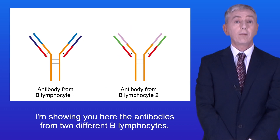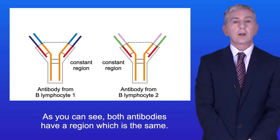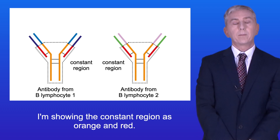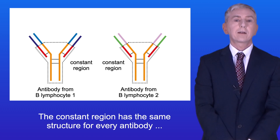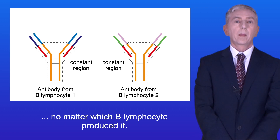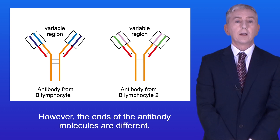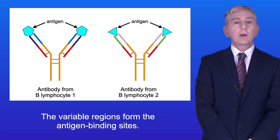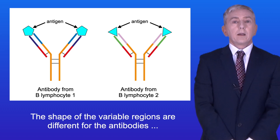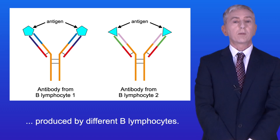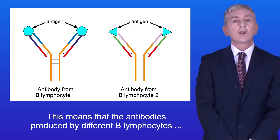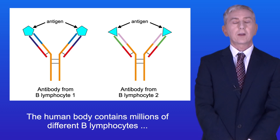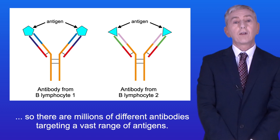Here are antibodies from two different B lymphocytes. Both antibodies have a region which is the same, called the constant region, shown here in orange and red. The constant region has the same structure for every antibody, no matter which B lymphocyte produced it. However, the ends of the antibody molecules are different; these are called the variable regions, and these are around 110 amino acids long on each chain. The variable regions form the antigen binding sites, and their shape differs between antibodies produced by different B lymphocytes, meaning those antibodies will bind to different antigens. The human body contains millions of different B lymphocytes, so there are millions of different antibodies targeting a vast range of antigens.